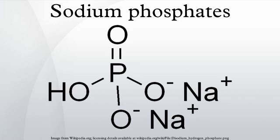Sodium phosphate is a generic term for a variety of salts of sodium and phosphate. Phosphate also forms families of condensed anions including di, tri, tetra, and polyphosphates. Most of these salts are known in both anhydrous and hydrated forms. The hydrates are more common than the anhydrous forms.